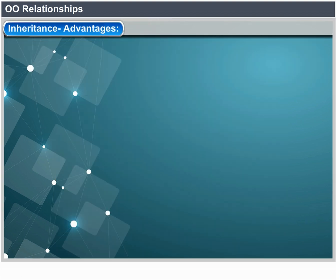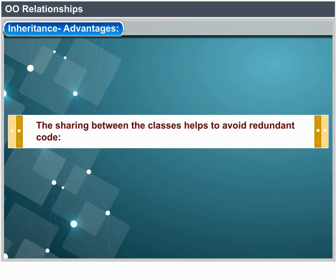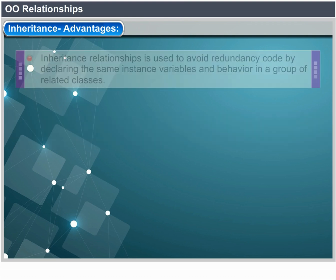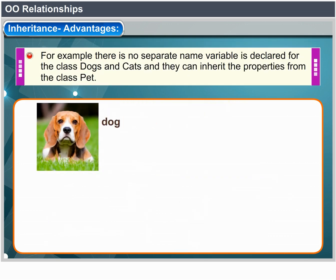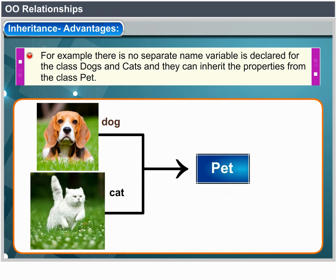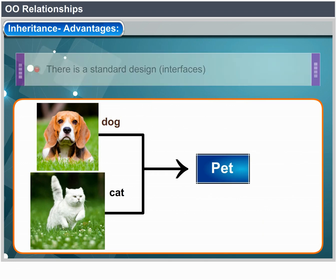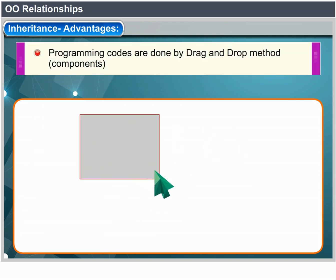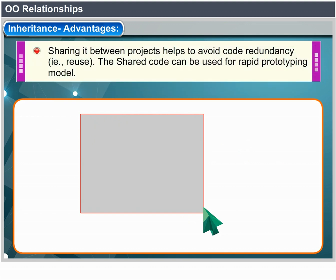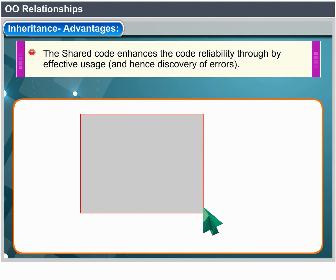Inheritance advantages: inheritance avoids redundant code by sharing it between classes. Inheritance relationships let us avoid declaring the same instance variables and behavior in multiple classes — dogs and cats can both inherit a name variable from pet. Other advantages include enforcing standards at a design level through interfaces, enabling programming by drag-and-drop components, supporting rapid prototyping via code reuse, and producing greater reliability through reuse and error discovery.